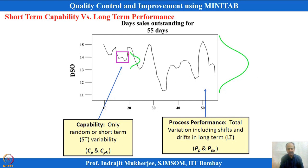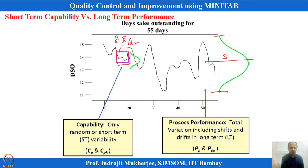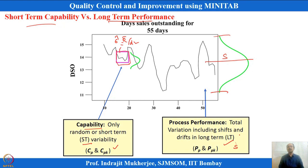Here you can see the short-term snapshot and long-term variability. S estimation represents long-term variability, while R-bar/D2 is used for short-term sigma estimation. When reporting capabilities we are talking about short-term capability based on CP and CPK. When reporting process performance using S estimation, that is long-term performance.